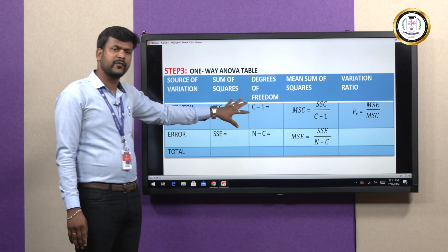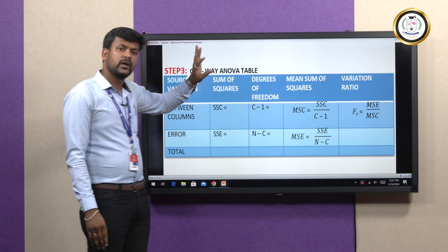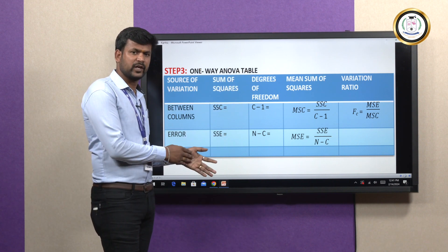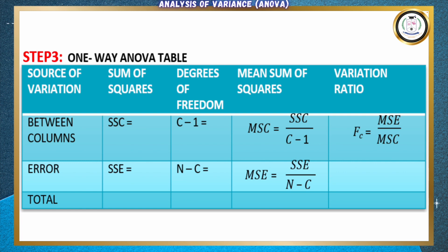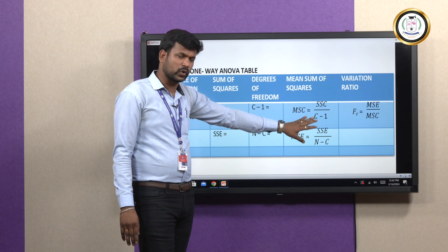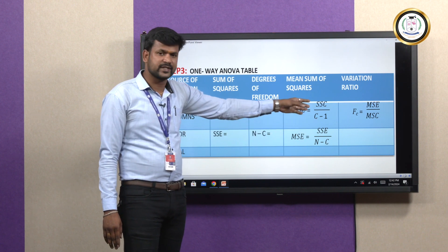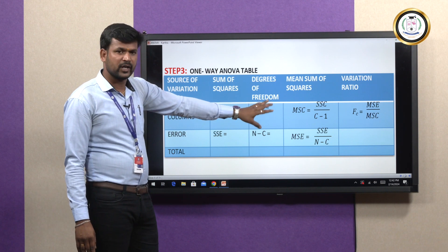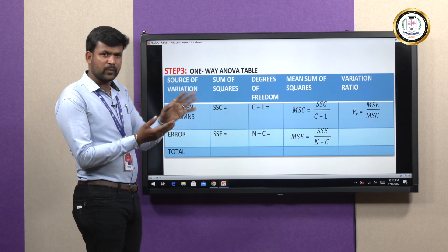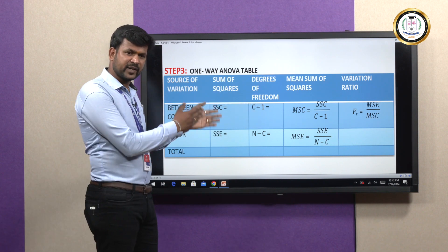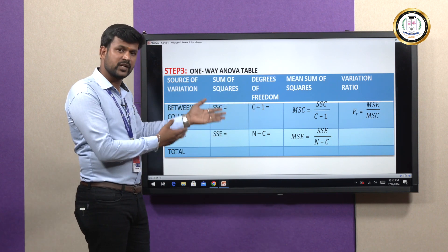Degree of freedom will be calculated through the F-test distribution. We can find the degree of freedom using the values C minus 1 and N minus C. Mean square is MSC for column and MSE for error. It has the formula SSC / (C − 1) and SSE / (N − C). I am telling about these elaborately because in two-way and three-way, this will remain the same.